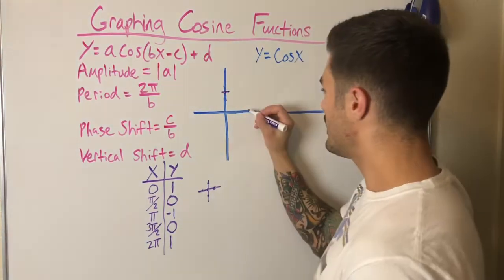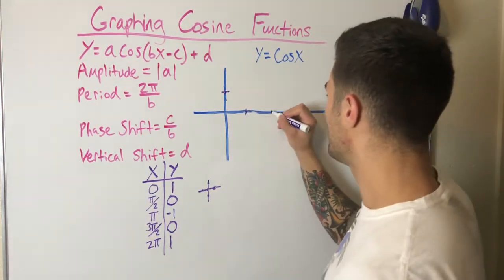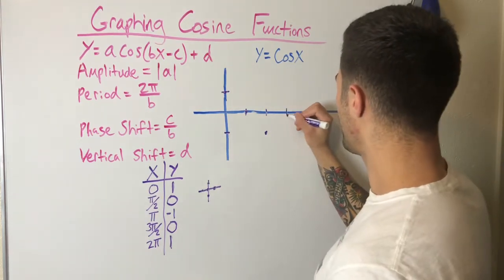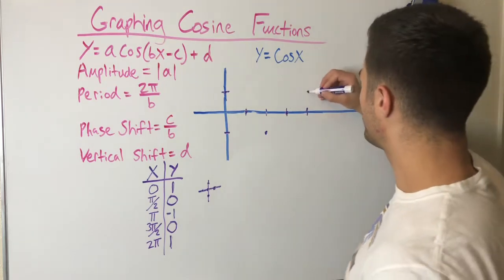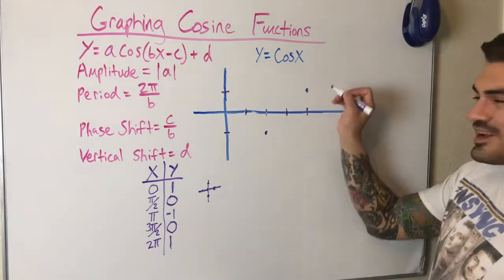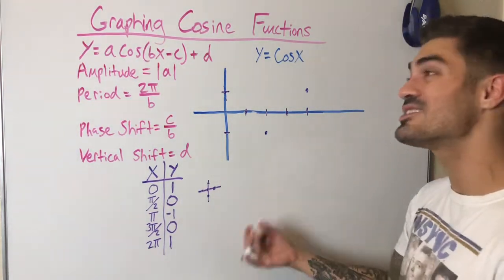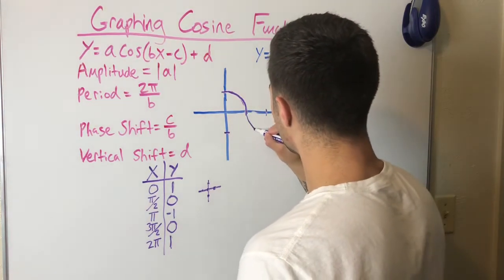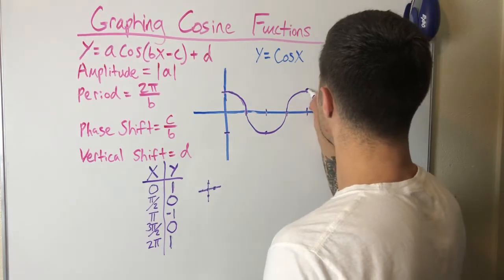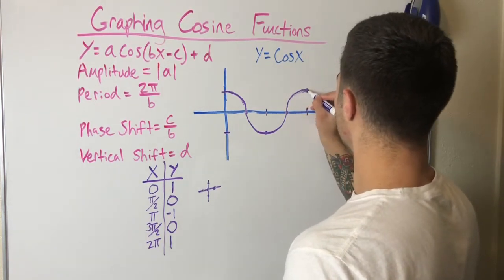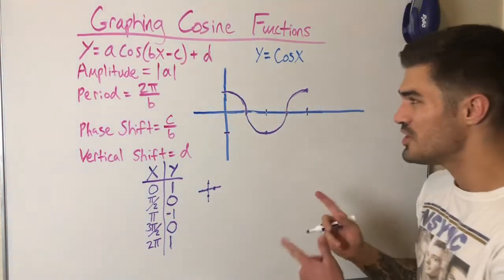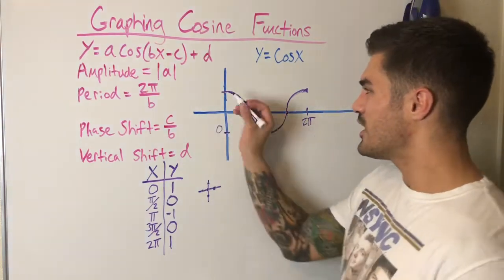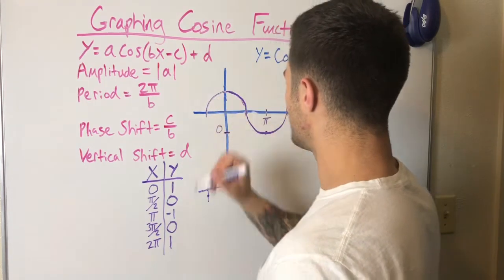I'll draw the first point up at (0, 1), then at π/2 I go down to 0, at π I go down to negative 1, then back up to 0, then back up to 1. This isn't a V-shape like an absolute value function — it's a wave, just like a sine wave. So we draw a smooth cosine wave. This is one period with length 2π, and the function keeps going forever in both directions.